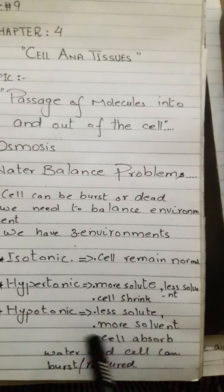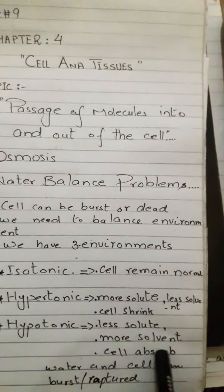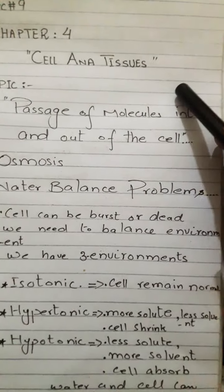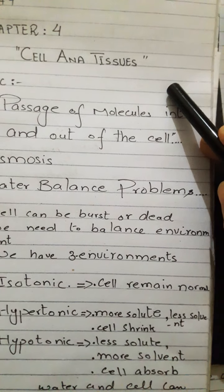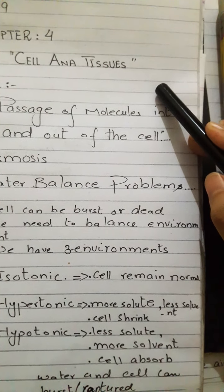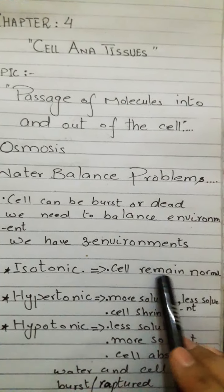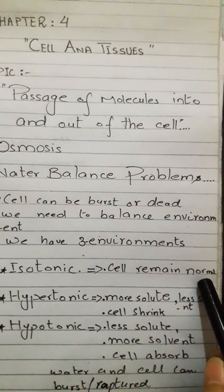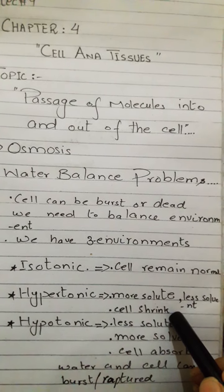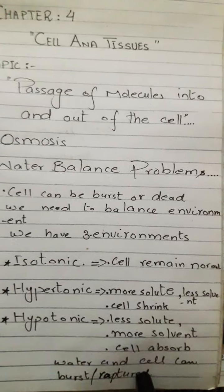In a hypotonic environment, the amount of solute is low and solvent — water — is more. Because water is already more in this environment, water will enter the cell. The cell will swell and become overfilled, like a balloon, and it will rupture or burst. So in isotonic environment the cell remains normal, in hypertonic the cell shrinks and loses water, and in hypotonic environment water is absorbed into the cell and the cell bursts or ruptures.